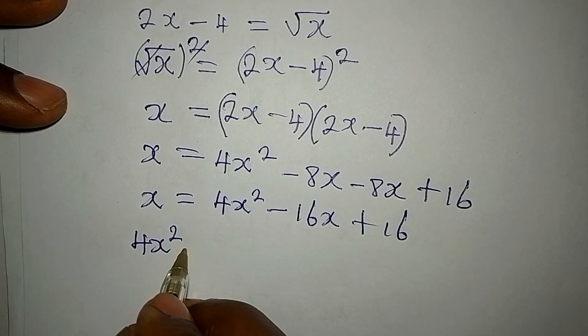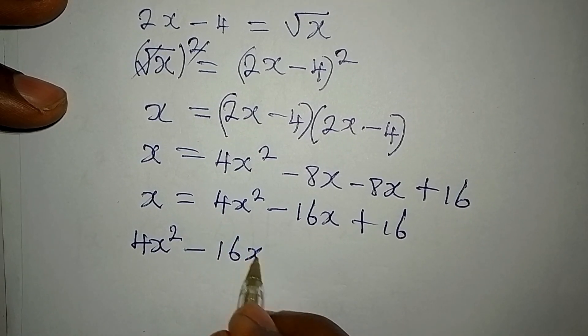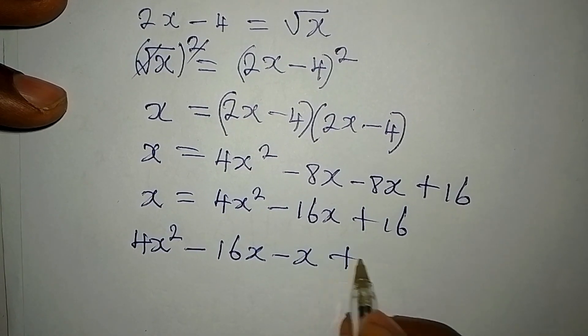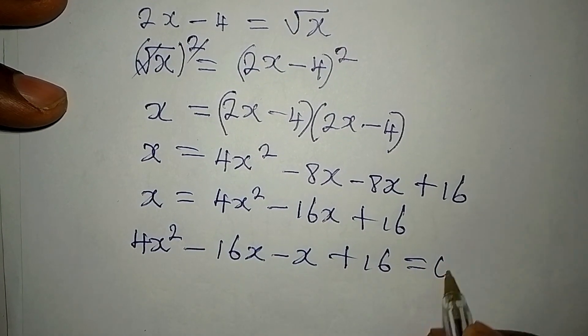Then, followed by x. We have minus 16x. This is still the same. It has to come. And then, we have plus 16. Everything is now equal to 0.